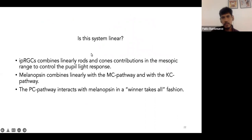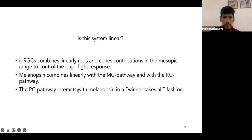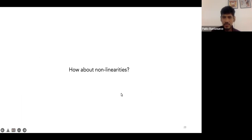To answer whether this system is linear, we obtained these conclusions: IPRGCs combine linearly rods and cones contributions in the mesopic range to control the pupil light response. Melanopsin combines linearly with the MC pathway and with the KC pathway. The PC pathway interacts with melanopsin in a winner-takes-all fashion.